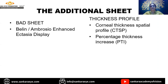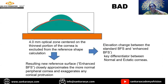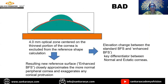The additional sheets include the BAD score and the thickness profile. The Belin-Ambrósio enhanced ectasia display: in cases with a very steep cornea, using the standard best fit sphere may miss subtle changes or very early cases. Belin-Ambrósio came up with a method where the central 4 mm optical zone of the patient's thinnest portion is eliminated and a new reference shape, called an enhanced best fit sphere, is created. The difference between the patient's cornea computed using the standard best fit sphere and the enhanced best fit sphere was found to be a key differentiator between normal and ectatic corneas.